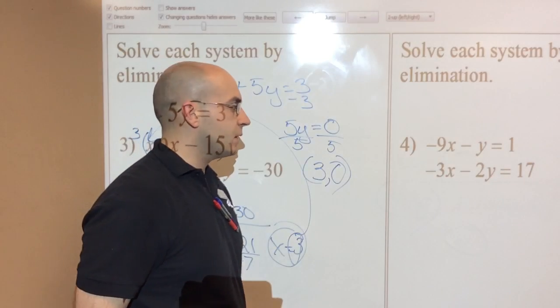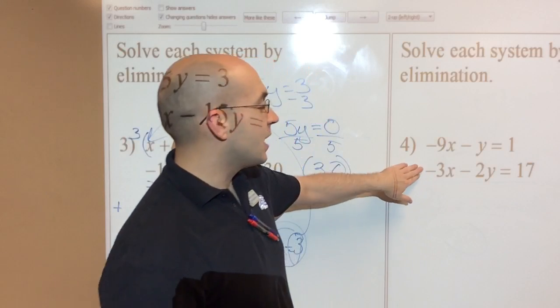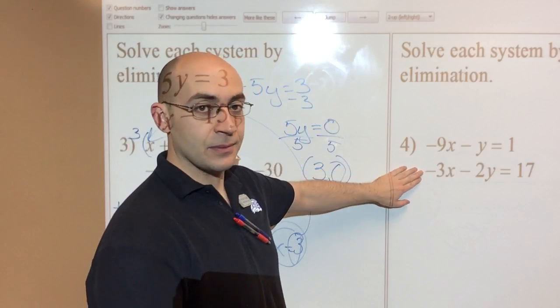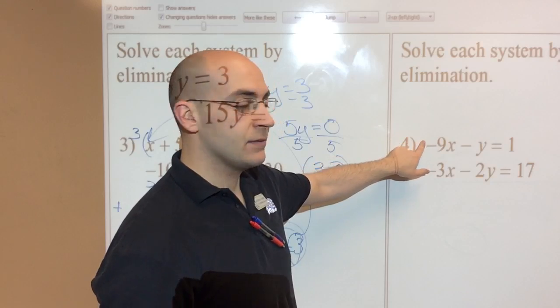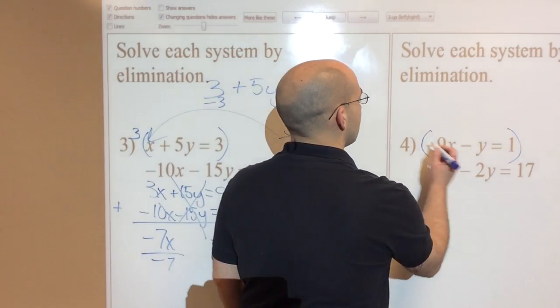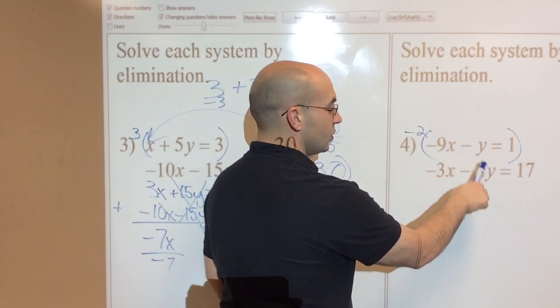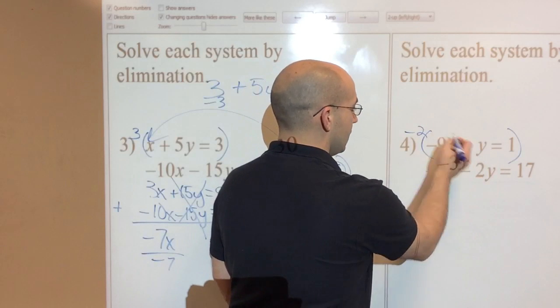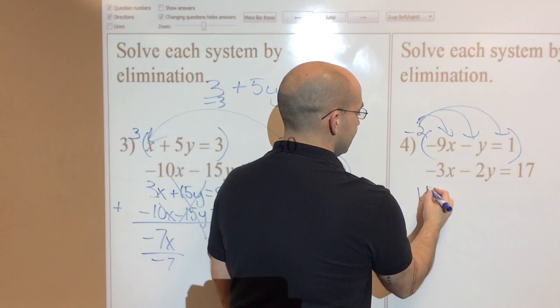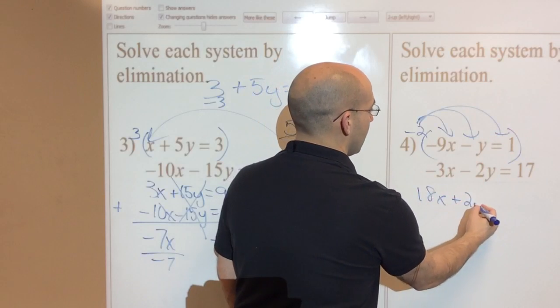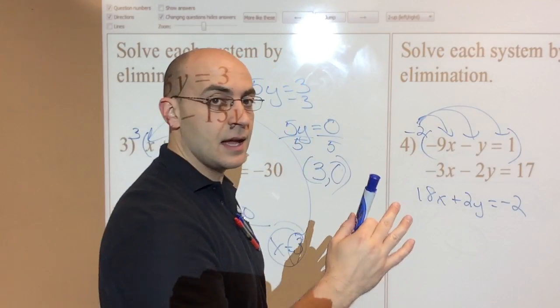Hopefully you paused me and you tried that one. If not, let's work it out. Could do a couple of different things here. I could multiply the bottom equation by negative 3 to get 9x. Or I could multiply the top equation by negative 2. I'm going to choose that one. Top equation by negative 2 because that will make this y a 2y, positive 2y. And then I'll be able to eliminate that. So distributing everywhere, I get 18x plus 2y equals negative 2. Remember, you're distributing to all three things in that equation.